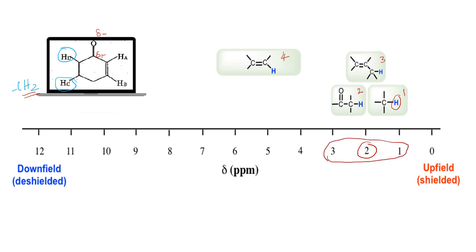HA and HB are actually vinylic protons — alkene protons. Because of magnetic anisotropy, they experience both their own electronic field and the external field, and so are observed at a higher value around 5 to 7 ppm. So HA and HB will be found between 5 to 7 ppm.